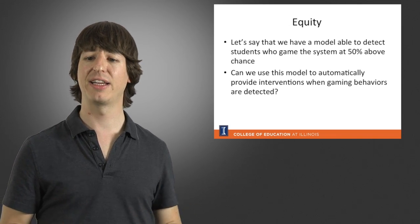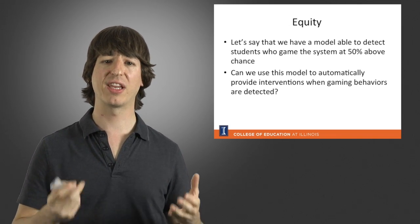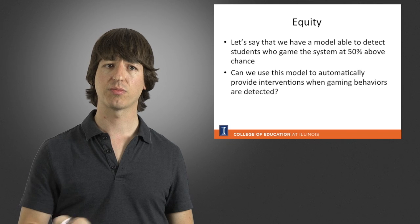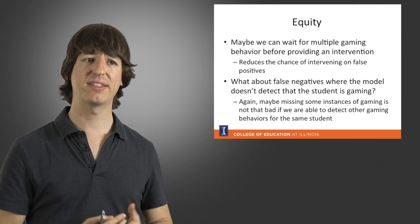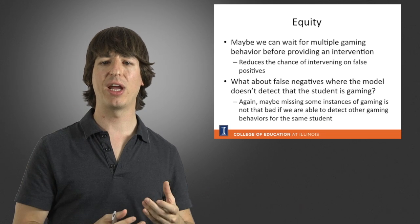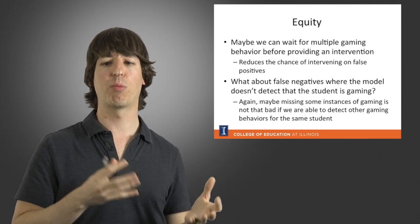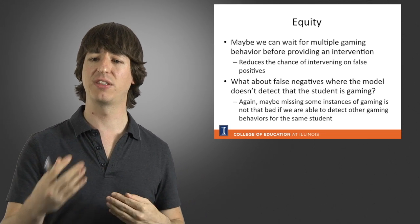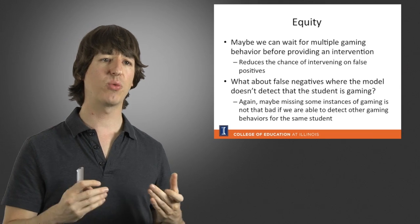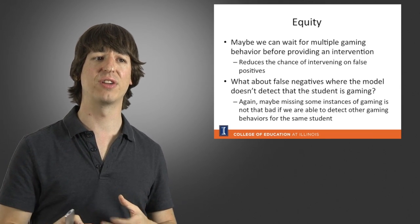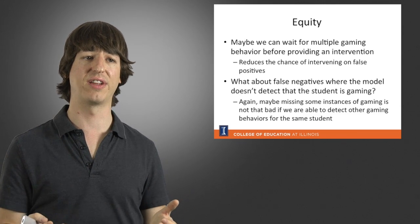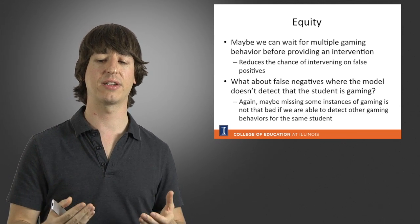Then, can we use this model to automatically provide interventions when gaming behavior is detected? So, one of the ways we might approach this problem is, say, maybe we can wait for multiple gaming behaviors before we start providing interventions. So, that would reduce the chance that we're going to give an intervention on a false positive where the student is not gaming, but we still detect the student as gaming.